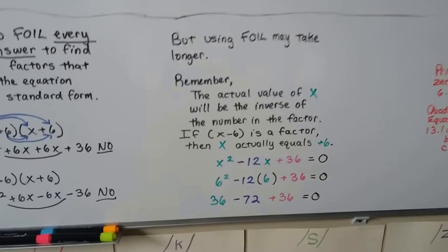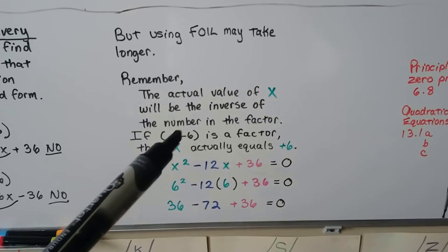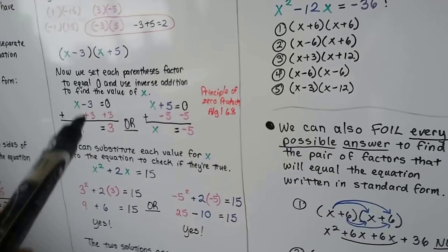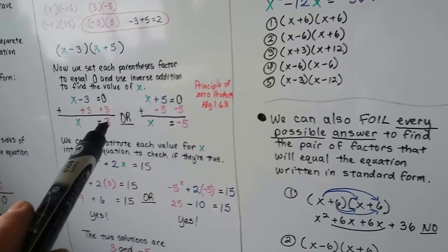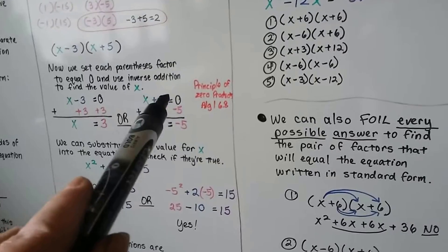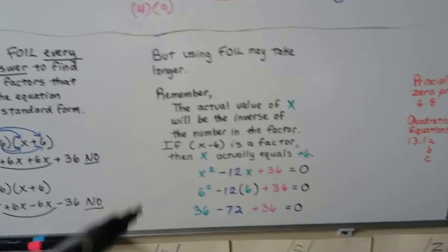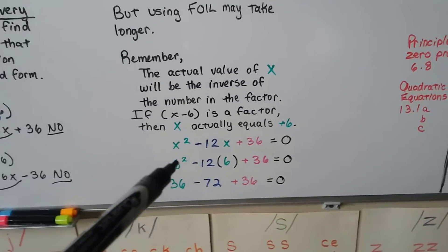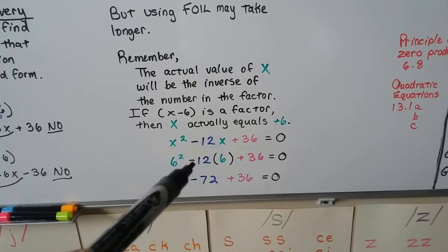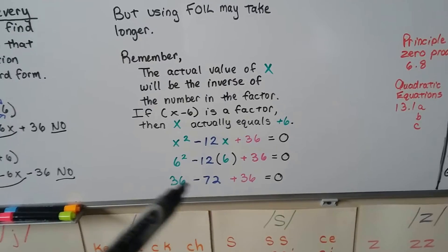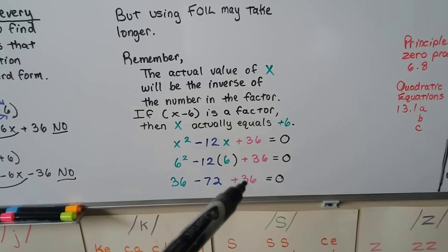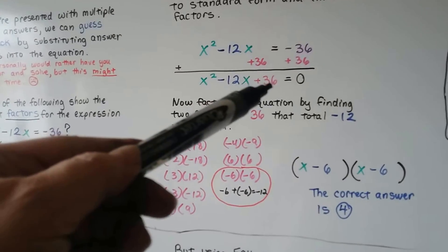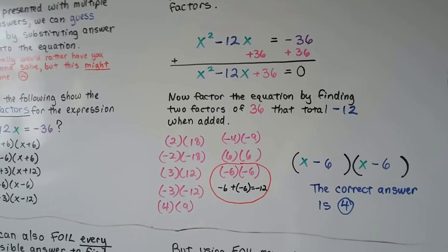And the actual value of x will be the inverse of the number in the factor. So, if it says x minus 6 is a factor, then x is actually a positive 6. Because, when we set them to equal zero, it said x minus 3, so x equals 3. It went from the inverse. And we had a plus 5, so x is equal to negative 5. So, remember when you see the factor that you know x is actually a positive 6. We can try putting a positive 6 in place of the x. And we get 36. Negative 12 times 6 is a negative 72. We add 36 again. And yeah, this does equal zero. This gets us to negative 36 plus 36 is zero. So, either way, if you have to FOIL it, that's fine. But, all you have to do is find two numbers that equal this one multiplied that equal this one added.